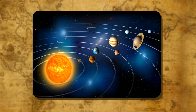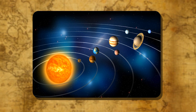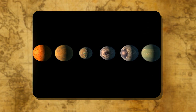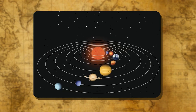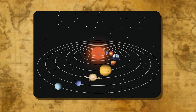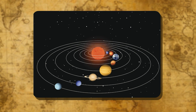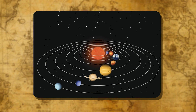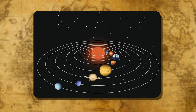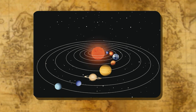The solar system is the name given to the collection of heavenly bodies that circle around the sun. The sun, eight planets, satellites, millions of asteroids, meteoroids, and countless comets make up the solar system. We can think of the solar system as the family of the sun.